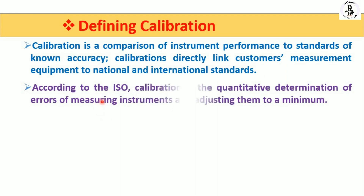According to ISO — the Indian Standards Organization — calibration is the quantitative determination of errors of measuring instruments and adjusting them to a minimum. With the help of calibration of your process, your product, or any kind of instruments, it gives assurance regarding your product.